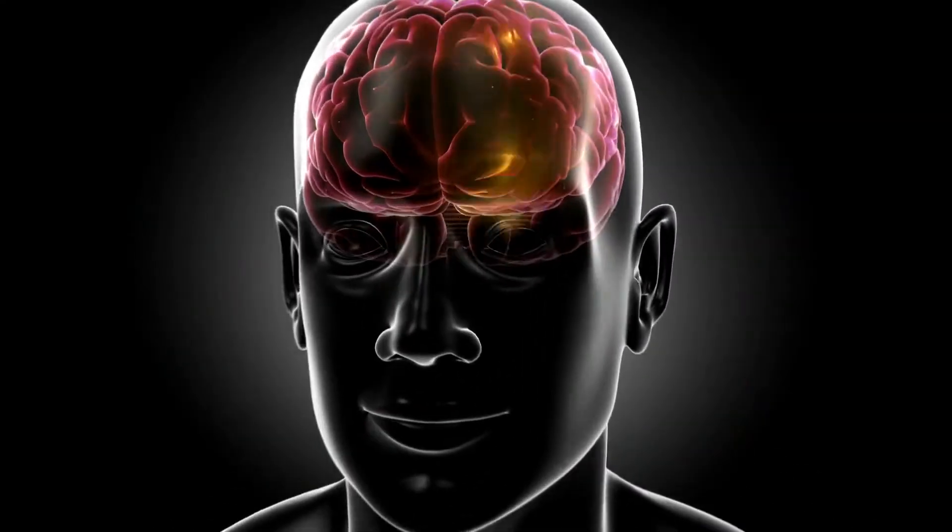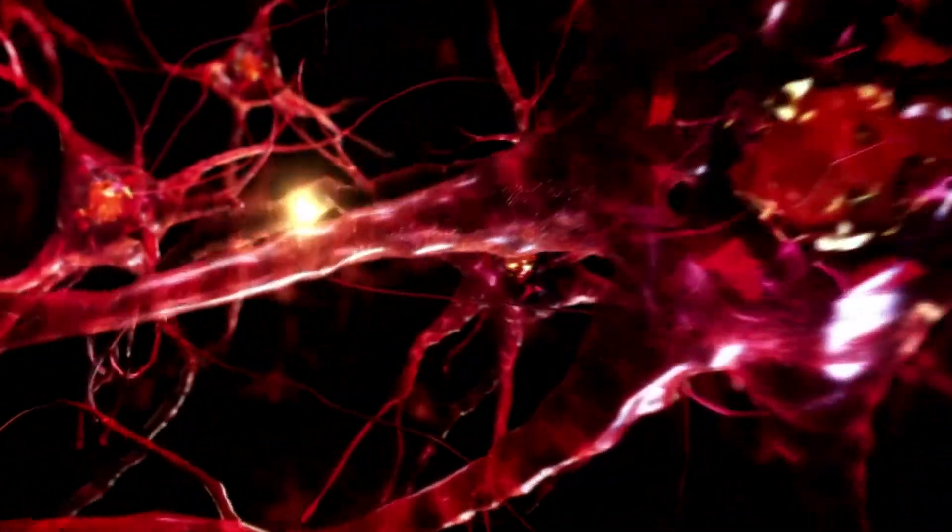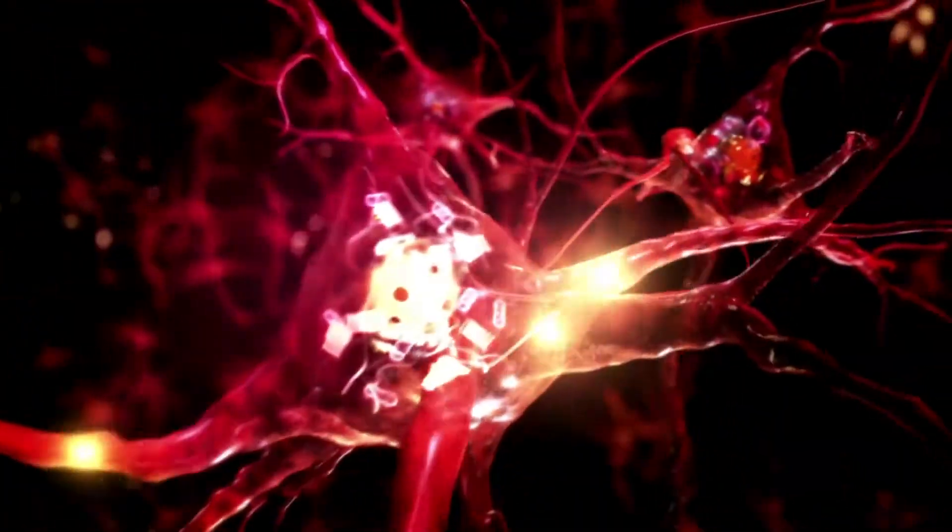DHA is the principal constituent of the plasma membrane of neurons found in the brain and cerebral cortex. It is also found in the retina and skin.